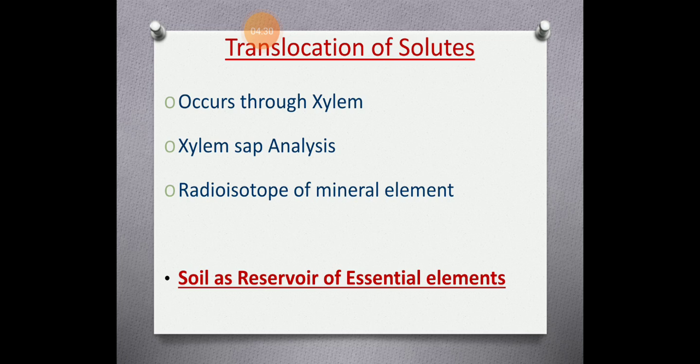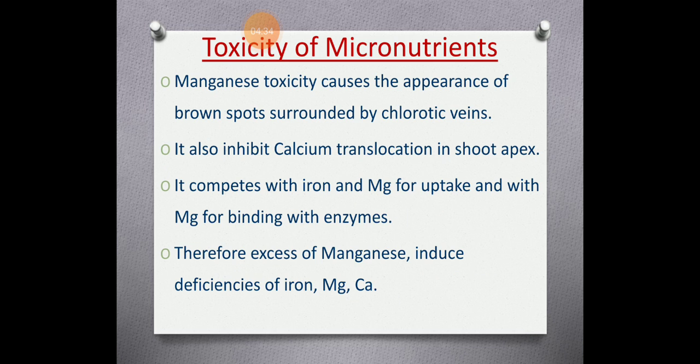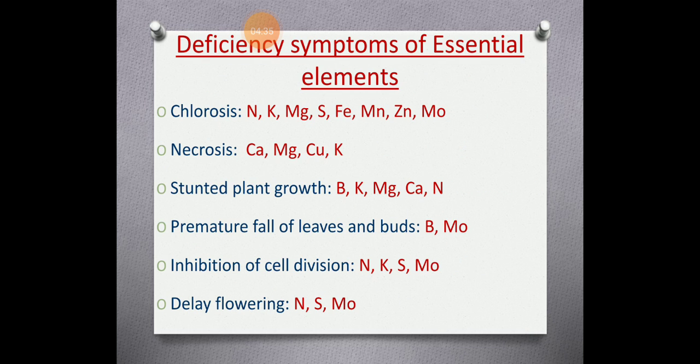In plants, the major essential elements occur in the soil, and the soil is referred to as a reservoir of essential elements. The plant will absorb all types of elements from the soil — whether essential or non-essential, and within essential elements, whether micro or macro. Deficiency of these elements causes various diseases.